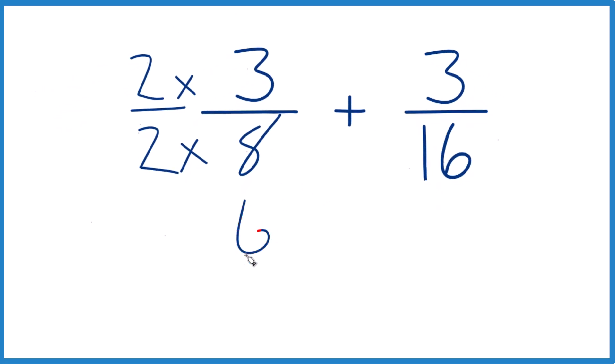2 times 3 is 6, and 2 times 8, that's 16. And 6 sixteenths, that's the same as 3 eighths. They're equivalent fractions.